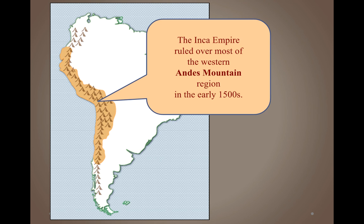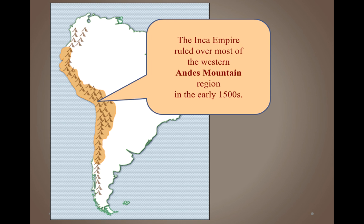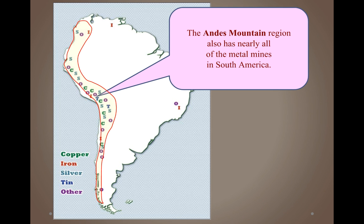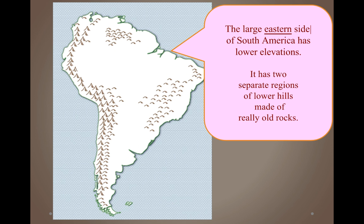The Andes Mountains have been uplifted by collisions of the Earth's crustal plates. Historically, the Inca Empire ruled within the Andes Mountains in the early 1500s. Nearly all of South America's metal mines are found in the Andes Mountains — copper, iron, silver, tin, and other precious metals. Whoever controlled this region historically controlled the wealth found in those metal mines.